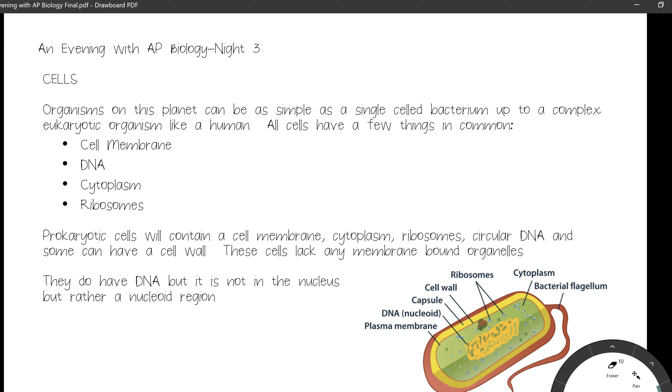Hello, and welcome back to night three of our 17-part series, An Evening with AP Biology. This evening, we're going to be talking about cells, and we're going to talk about prokaryotic cells and eukaryotic cells.